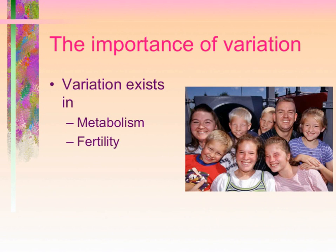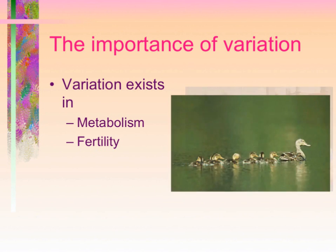Variation exists in fertility. Some organisms will produce a certain number of offspring to increase their chance of passing on their genes from one generation to the next. Other organisms, such as flies or fish, will produce more offspring in order to make the transition to adulthood where they can continue to propagate their species.